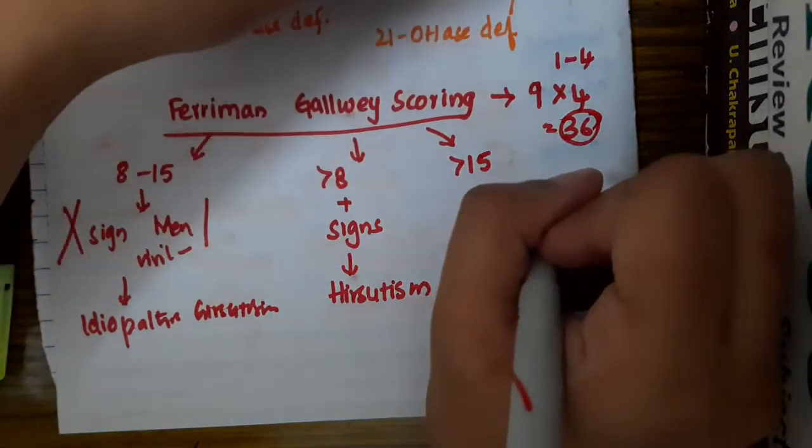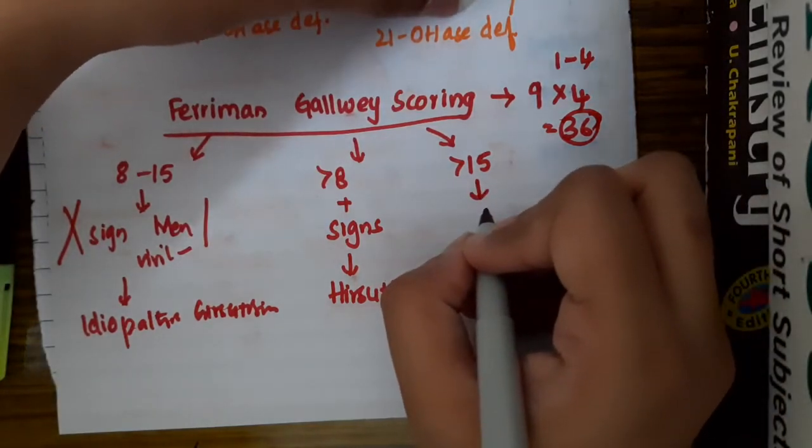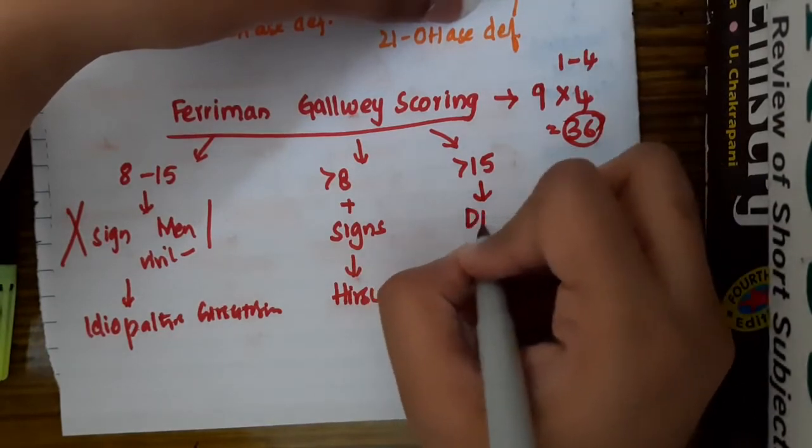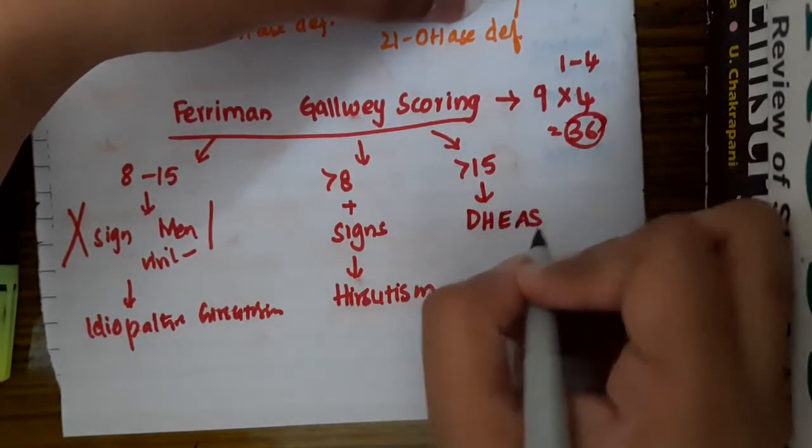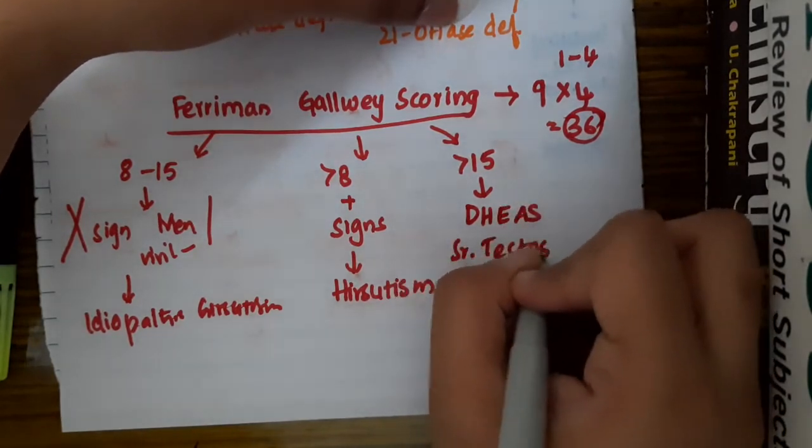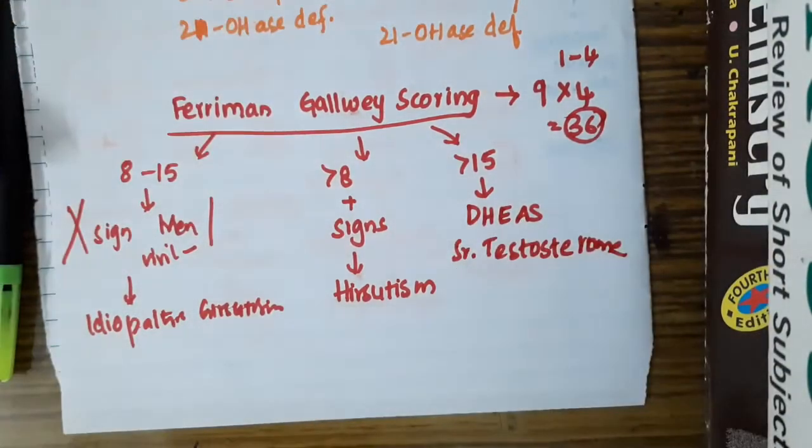you should always suspect that there is some virilization can occur. So, you should check for dihydroxyepiandrosterone and serum testosterone estimation should be done if the score is more than 15.